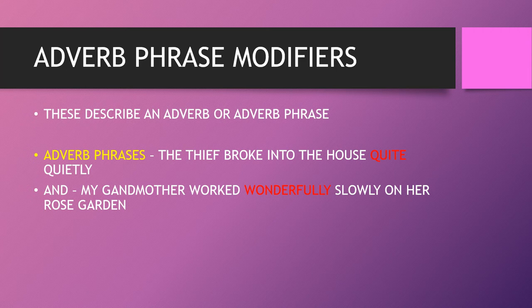Adverb phrase modifiers describe an adverb or adverb phrase. For example: 'the thief broke into the house quite quietly' and 'my grandmother worked wonderfully slowly on her rose garden' — not just slowly, but wonderfully slowly. We are adding more depth and meaning every single time we use these.